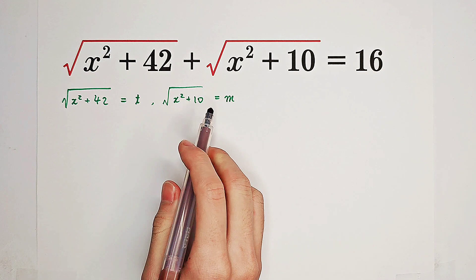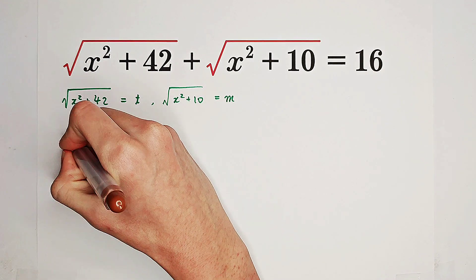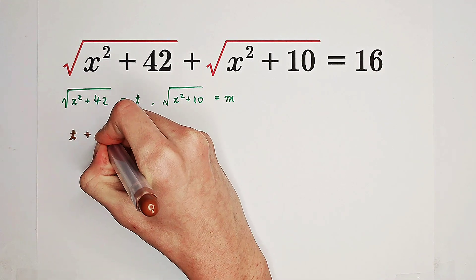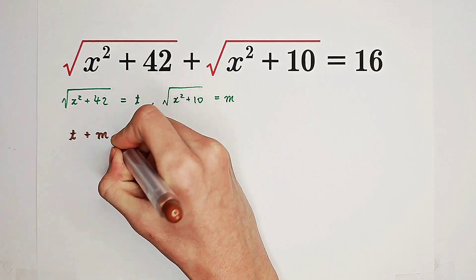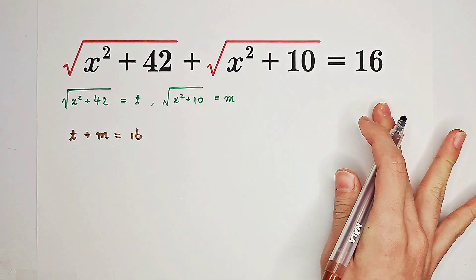Now we can acquire the system of equations about t and m. Firstly, the sum of these two square roots, the sum of t and m, is just 16 according to our original equation.